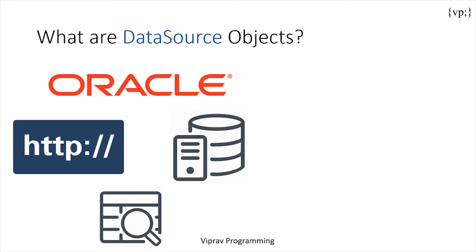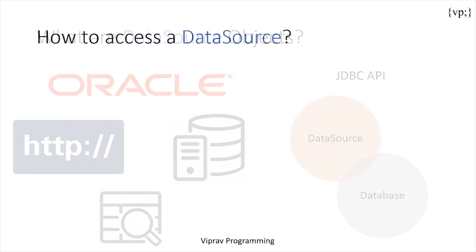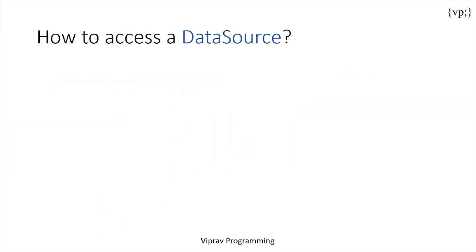In the JDBC API, databases are accessed using the data source objects. In GlassFish server, a data source is called a JDBC resource. Now let's take a look at how to access a data source.